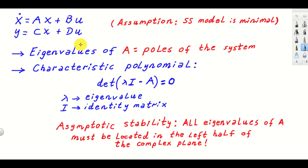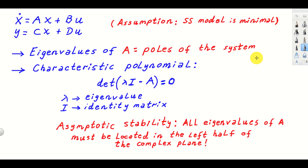Here is a brief summary of the procedure for testing stability. We start from a state-space model in the general state-space form, implicitly assuming that the model is minimal and that there are no pole-zero cancellations. From previous lectures, we know that the eigenvalues of the matrix A are actually the poles of the system, and consequently we investigate stability by computing and inspecting the locations of those eigenvalues.